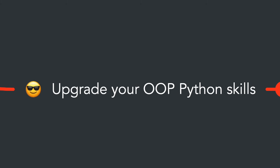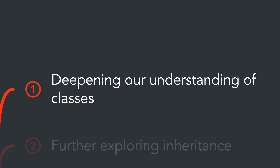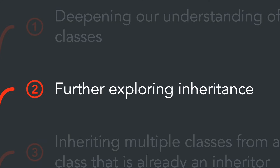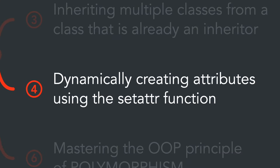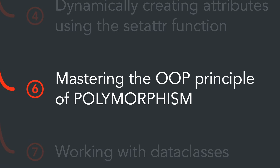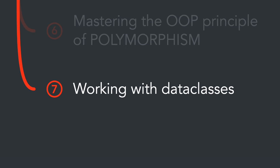By the end of today's lesson, you'll learn how to design using code, become a master of the Pillow library, write your own pin generator, and enhance your Python object-oriented programming skills. Specifically, we'll deepen our understanding of classes, further explore inheritance, inherit multiple classes from an already inheriting class, and dynamically create attributes.